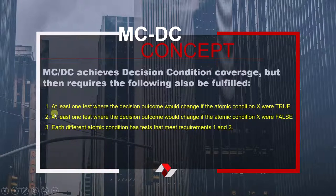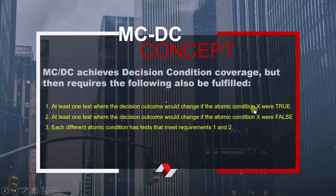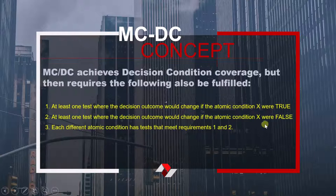The first condition is: there must be at least one test where the decision outcome would change. How will it change? If the atomic condition were true, it should influence the decision — it should make the decision true or false, but it must influence the decision.